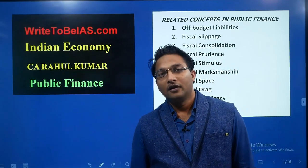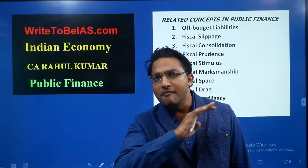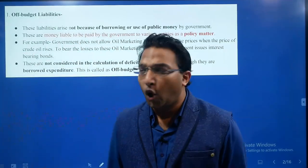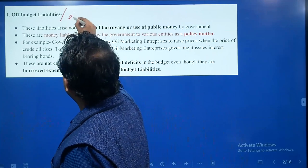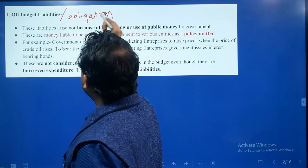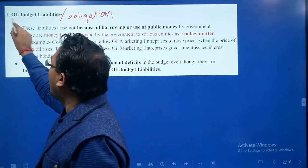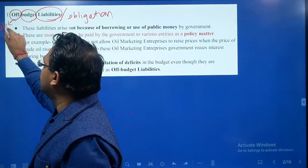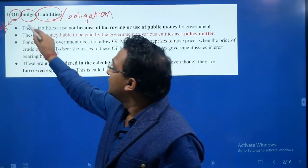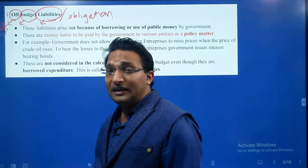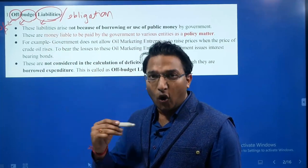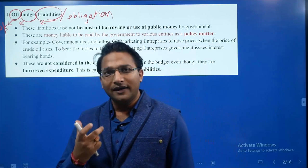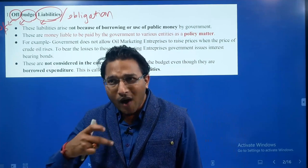Hello friends, welcome. In this session I will discuss many important concepts, starting with off-budget liabilities or off-budget obligations. This term has three words: 'off' means it is outside the budget, not inside the budget. 'Liability' means it's an obligation which has to be paid by the government. Now, any obligation which has to be paid by the government — why is it not part of the budget?